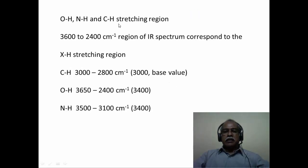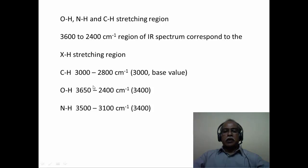The OH, NH, and CH stretching region is a very unique region. This is on the left-hand side of the infrared spectrum, starting from 3600 inverse centimeter to 2400 inverse centimeter. It is a fairly broad region, but within this region one can classify the CH, OH, and NH frequencies based on the masses of the atoms attached — namely carbon, oxygen, and nitrogen. The CH region is typically from 3300, with a base value of about 3000, extending from 3300 to about 2800 inverse centimeter. The OH region is typically between 3650 to 2400, with a base value of about 3400 inverse centimeter. The NH region corresponds to 3500 to 3100, with essentially the same base value as OH.